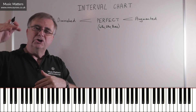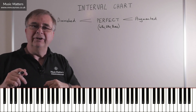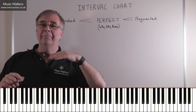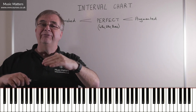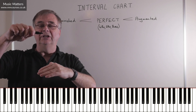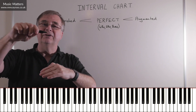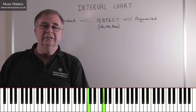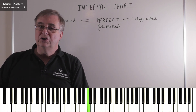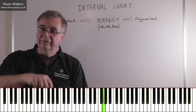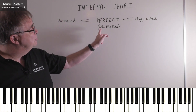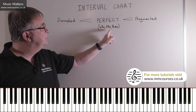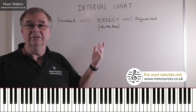For example, C to G is a perfect fifth, because C, D, E, F, G is a fifth. You work in the major scale of the lower note, and the fifth note of C major is G. Because G is the fifth note of C major, that is a perfect fifth. So C up to G is a perfect fifth because G is the fifth note of C major. And this helps you remember that because it's a fifth, it must be perfect — so anything that's a fourth, fifth, or octave is a perfect interval.